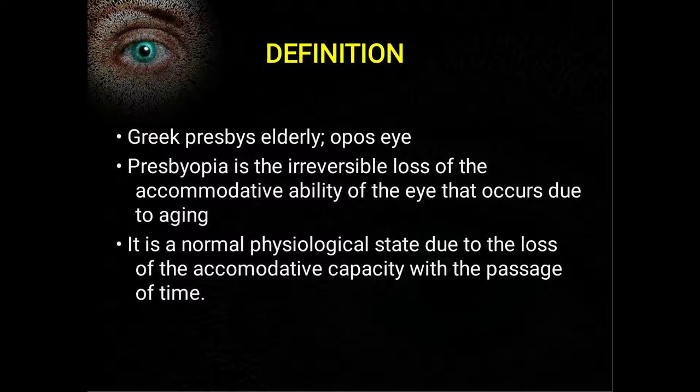It is a normal physiological state due to the loss of accommodative capacity with the passage of time. Accommodation is a special feature the eyes are endowed with, by which we can focus on near objects clearly, using the accommodation apparatus — which includes the ciliary body, the zonules, and the crystalline lens of the eye.